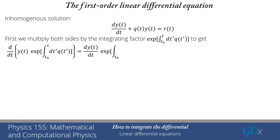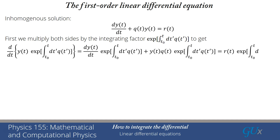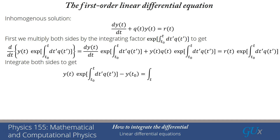If I multiply that out, I can work out the derivative d/dt of y(t) times that exponential. It equals dy/dt times the exponential, plus y(t) times q(t) times the exponential — just like multiplying the left-hand side of the differential equation by this exponential factor. On the right-hand side I get r(t) times that exponential factor. Because it's a perfect derivative on the left-hand side, I can integrate it. When I do, I get y(t) times the exponential of the integral of q(t), minus y(t₀), and that equals the integral from t₀ to t of r(t') times the exponential of the integral from t₀ to t' of dt'' q(t'').